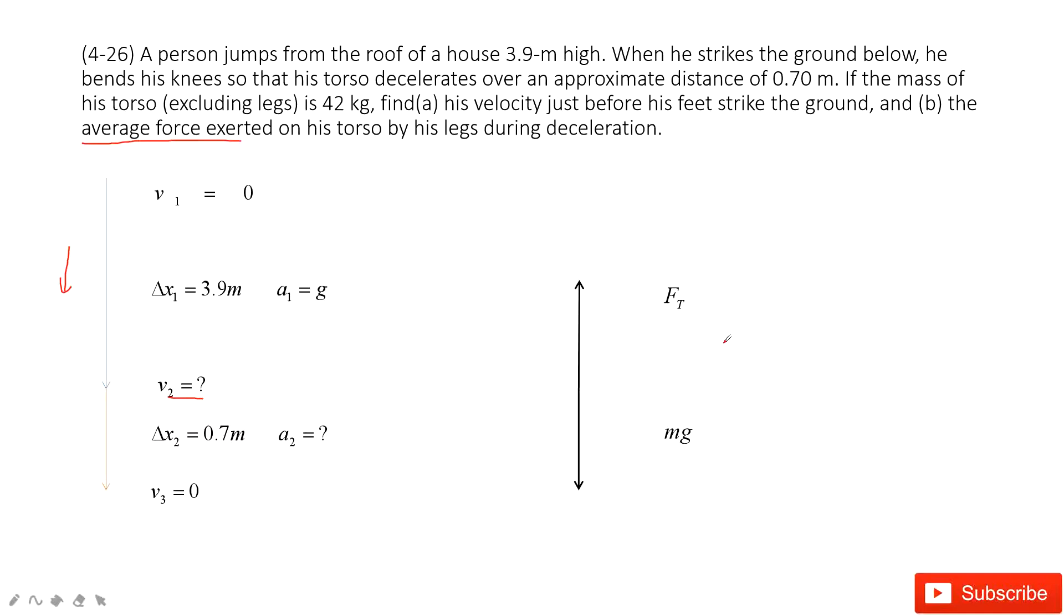And if we write Newton's second law, we say the net force equals the mass times acceleration. So we choose down as positive. So mg minus F_T equals the mass times acceleration 2, a_2.